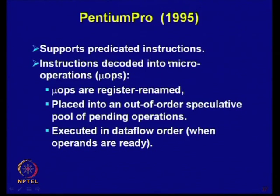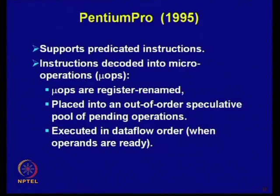Pentium Pro was introduced in 1995. It supports predicated instructions. Instructions are decoded into micro-operations — just like other processors — and micro-operations are register-renamed and placed into an out-of-order speculative pool for pending operations. A new feature added is that execution is done in data flow order: as soon as operands are available, the execution of that particular operation is performed. Based on this, Pentium Pro execution of instructions takes place.